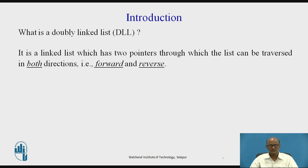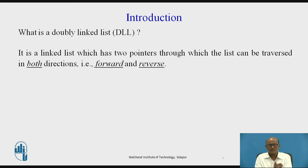Let us see what is a doubly linked list. It is a linked list which has two pointers through which the list can be traversed in both directions — that is, in the forward direction and in the reverse direction. As we know, in a singly linked list the traversal was in only the forward direction, but in a doubly linked list we can traverse forward as well as reverse.